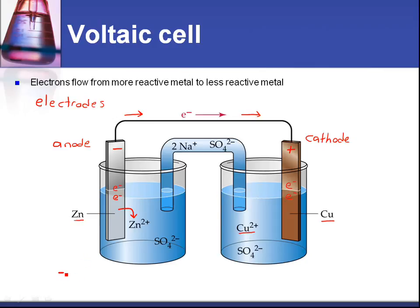So we can write half equations for these. We've got zinc as a solid piece of metal, and it's making Zn2+ ions in aqueous solution plus 2e-. That's oxidation, loss of electrons. On the right-hand side, we have Cu2+ ions in aqueous solution, and they are gaining two electrons to make copper metal as a solid.